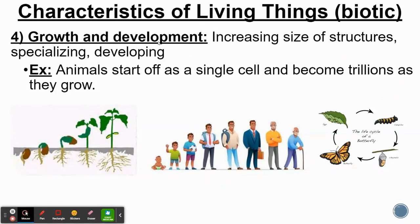The fourth characteristic is growth and development. Living things are able to increase in size, specialize their structures to do more specific jobs, and develop over time. A simple example: a plant starts from a seed and becomes a full-grown plant. A child starts as a child and becomes an adult. A butterfly goes from caterpillar to cocoon to butterfly. As living things get bigger, they also develop more specialized structures that do more specific jobs.